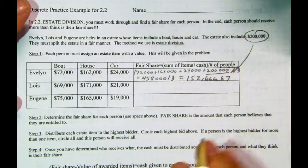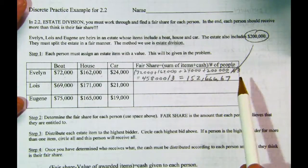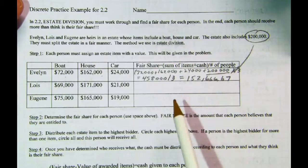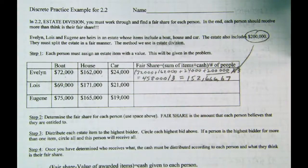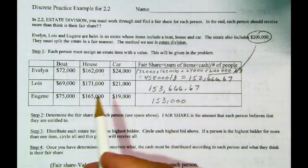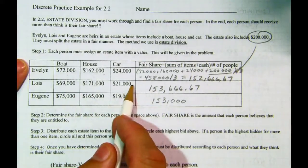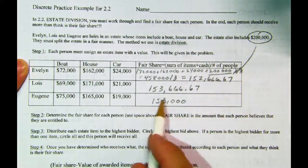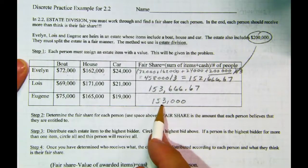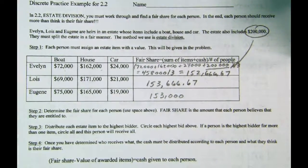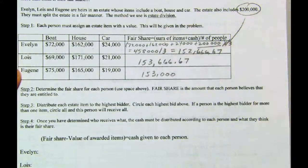We're going to get a little bit of rounding problems, but if people get more than their fair share, they're not going to worry about a penny. Go ahead and do the same thing for Lois and Eugene — pause and figure out what they think their fair share is. For each of them, take their bids on all items plus $200,000 and divide by three. Don't forget to divide by three. Double check your work and see if the numbers work out.